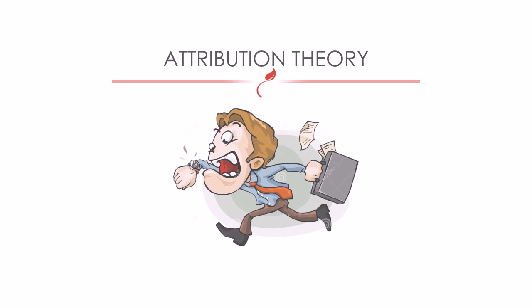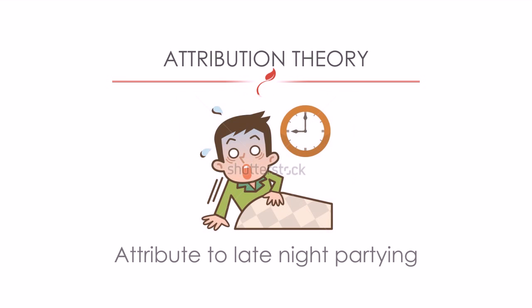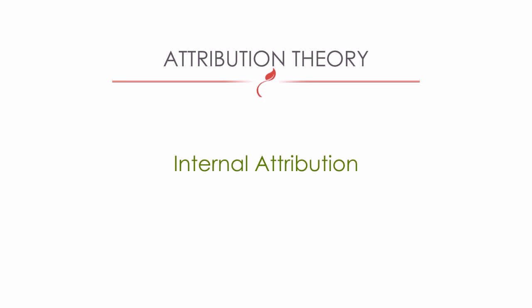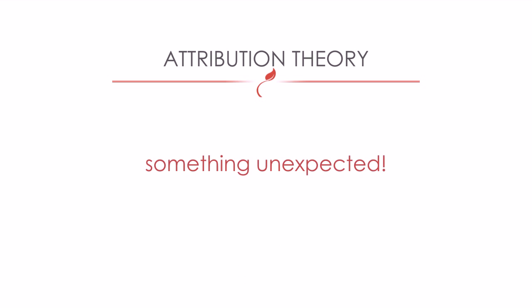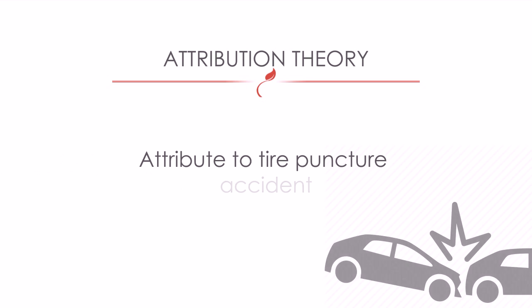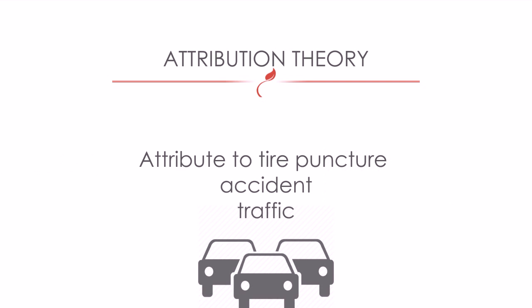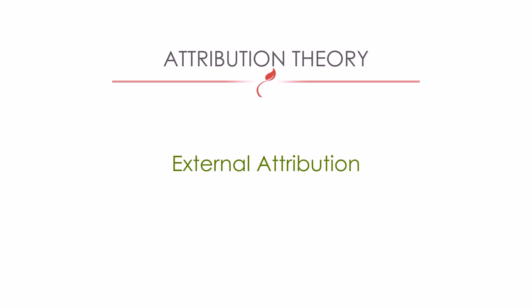Suppose your friend comes late to a meeting. You might attribute that to his late night partying and oversleeping — this is an internal attribution, as you think it was under his personal control. But if you attribute this to something unexpected and out of his control, such as a tire puncture, an accident, or traffic, you are making an external attribution.